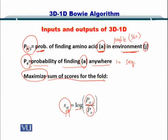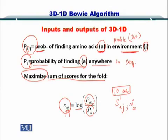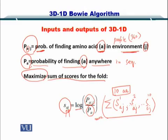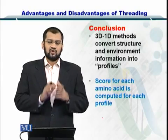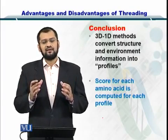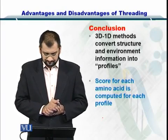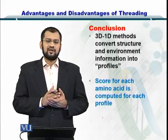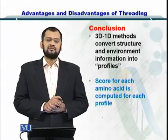All you have to do is maximize the sum of these scores for the fold. Since a fold contains multiple amino acids — say 10 amino acids — you sum all the S(A,J) scores and maximize them. This sum will be the score used to predict the structure. In conclusion, the 3D-1D algorithm converts the structural, physical, and chemical properties of an amino acid into a 1D profile and then maximizes the score of such profiles. Once you have computed the score for each amino acid within each profile, you can predict the structure you are interested in.